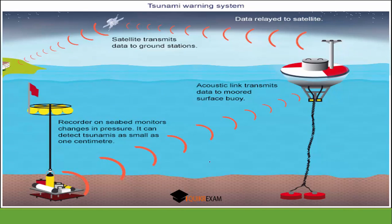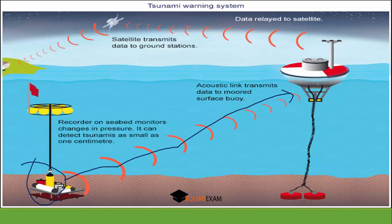People have developed an early warning system for tsunamis. They place sensors on the seabed, and these sensors monitor the pressure. When there is any change in pressure, they send a signal to a system floating on the sea, which then sends the signal to a satellite, and the satellite sends the signal to a station on land.